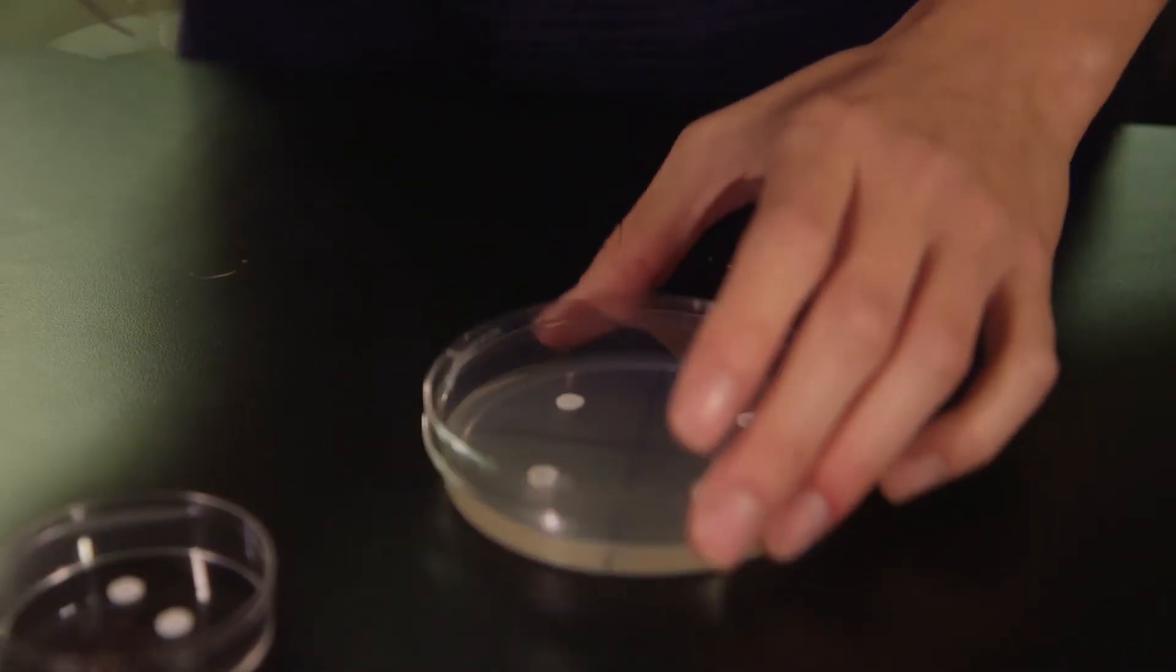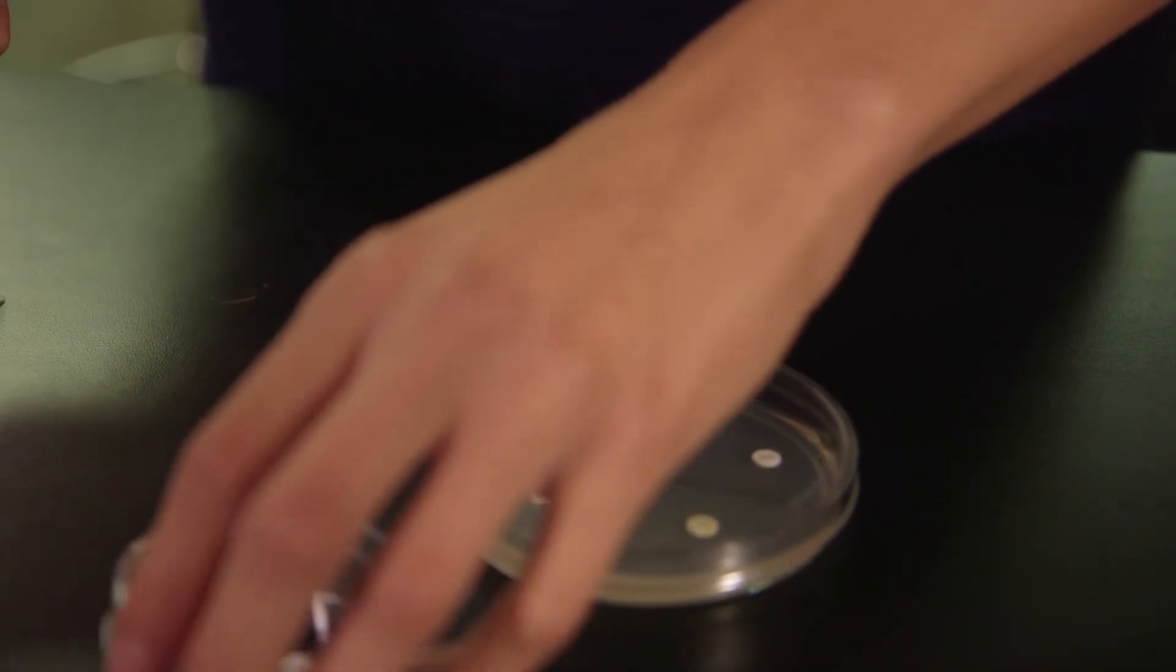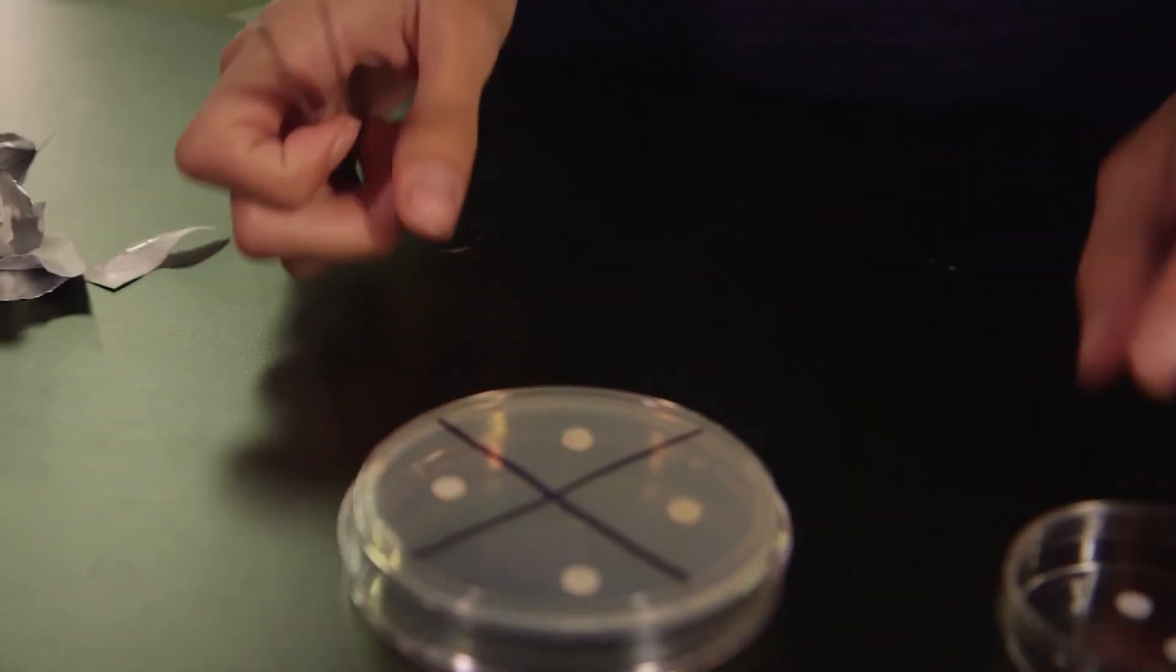We will incubate your plate at room temperature in an upside-down position. That is to say, with the agar surface on the top. This is to prevent condensation from the lid caused by the respiration of the bacteria from raining down on the agar surface and interfering with bacterial growth.